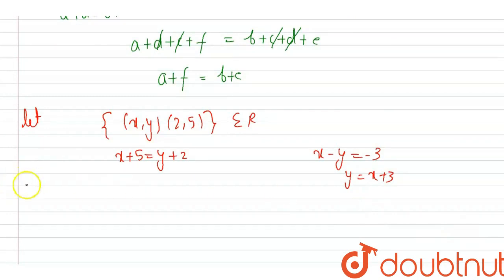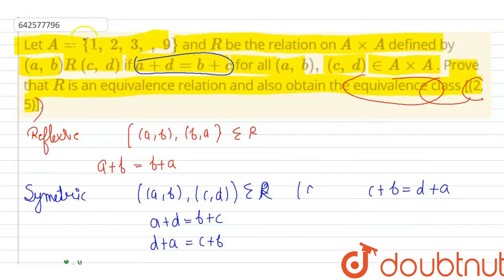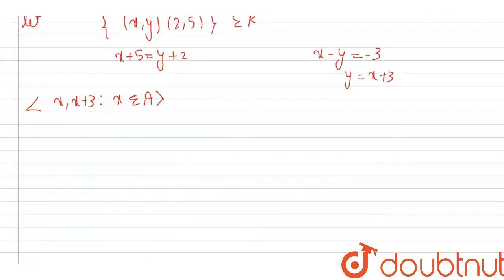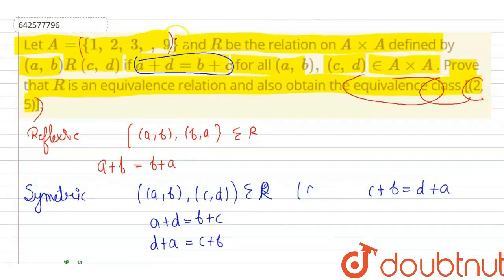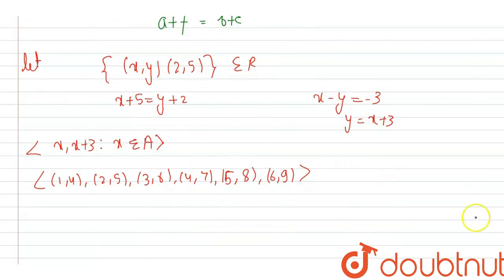We can write this as (x, x+3) where x belongs to A. The values of A given are 1 to 9. Putting x=1 gives (1,4); x=2 gives (2,5); x=3 gives (3,6); x=4 gives (4,7); x=5 gives (5,8); and x=6 gives (6,9). We can't exceed (6,9) because A values belong from 1 to 9. So, this is our answer. Thank you.